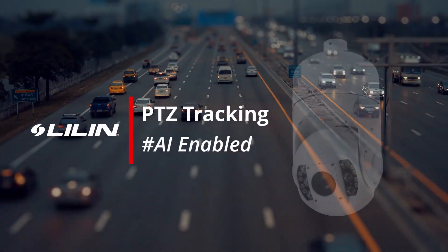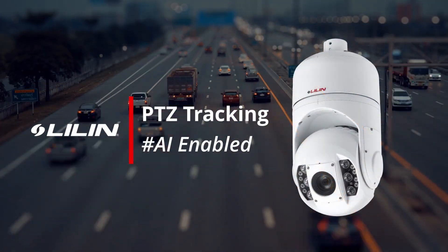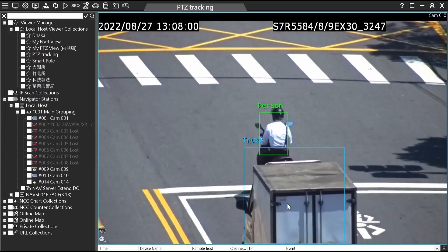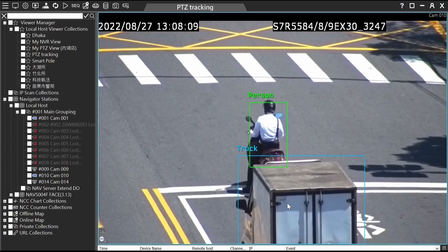Lillin Intelligent Surveillance Solution, through AI Recognition System, accurately identifies vehicles and pedestrians. Used with PTZ Camera, it also realizes tracking function.